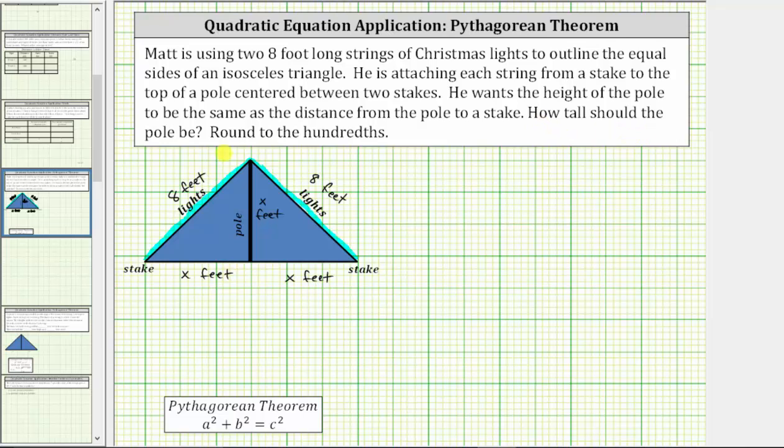How tall should the pole be? Round to the hundredths. Notice how the pole cuts the isosceles triangle into two right triangles, one on the left and one on the right, which means we can use the Pythagorean theorem to determine how tall the pole is.